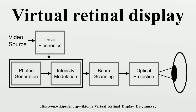The scanner could be used in a calligraphic mode, in which the lines that form the image are drawn directly, or in a raster mode. Much like standard computer monitors or television, use of the raster method of image scanning allows the VRD to be driven by standard video sources. To draw the raster, a horizontal scanner moves the beam to draw a row of pixels. The vertical scanner then moves the beam to the next line where another row of pixels is drawn. After scanning, the optical beam must be properly projected into the eye.